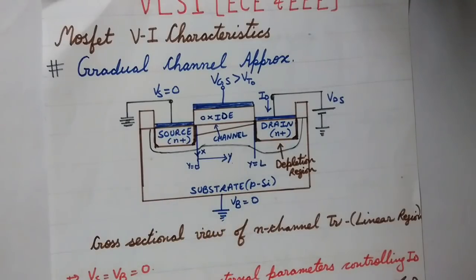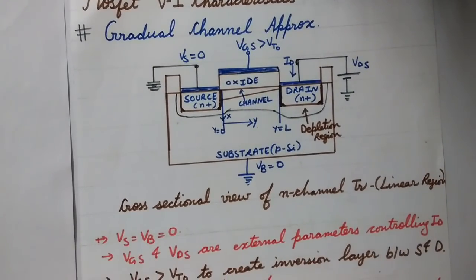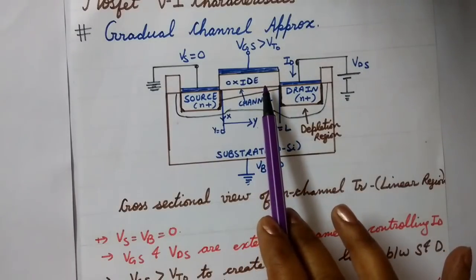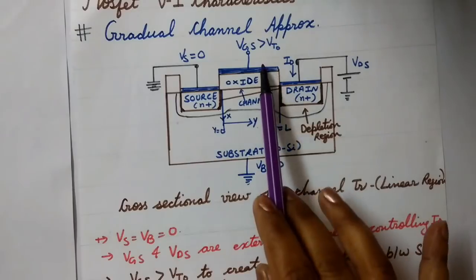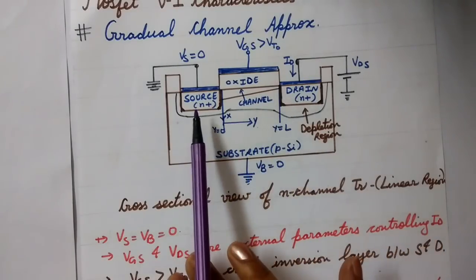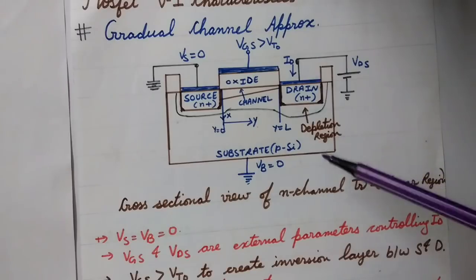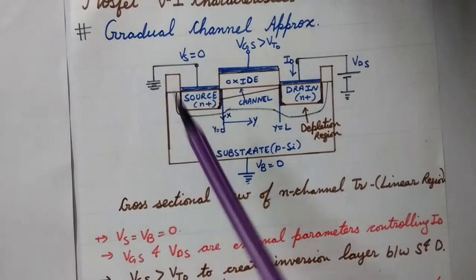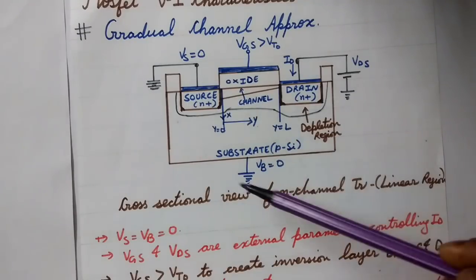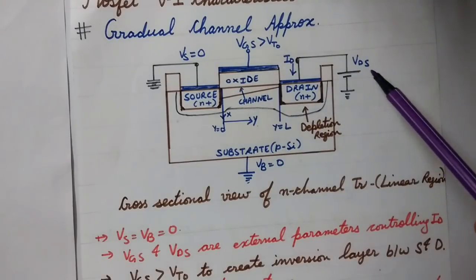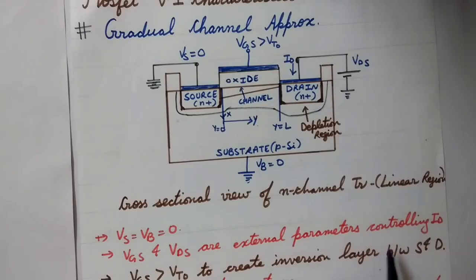I have drawn the cross-sectional view of the n-channel MOSFET operating in the linear region. In the center we have the MOS system in which the oxide, acting as a dielectric, is sandwiched between the gate and the substrate. Towards the left we have the source end and towards the right we have the drain end. The source as well as the substrate — also called the body — are both grounded, so VS and VB equal zero.